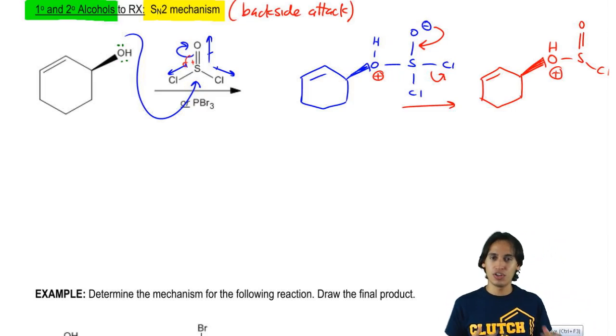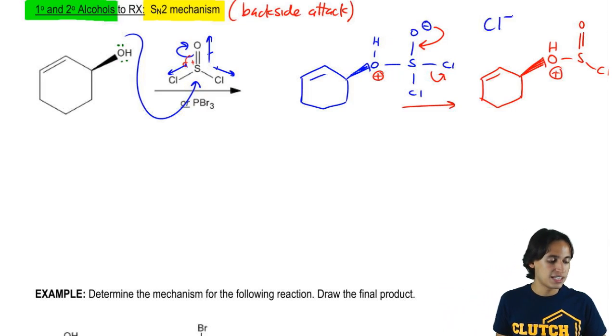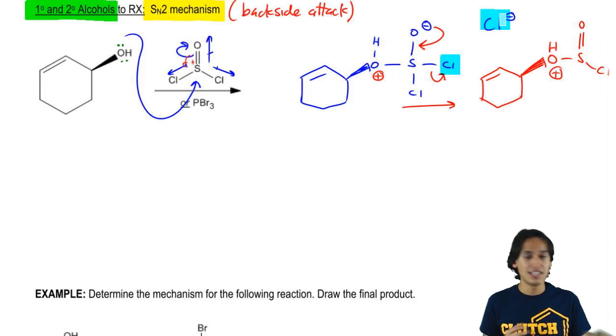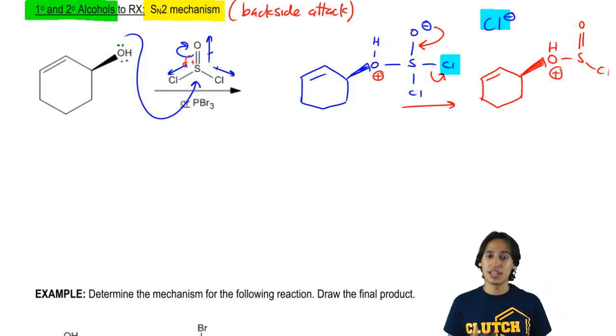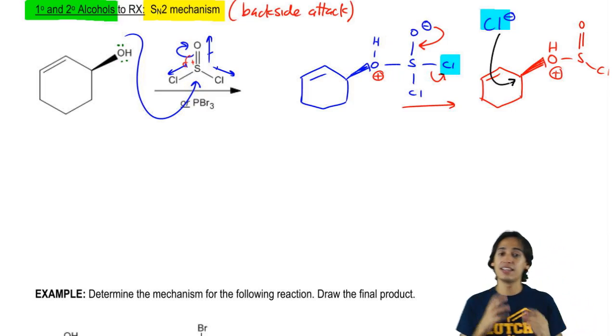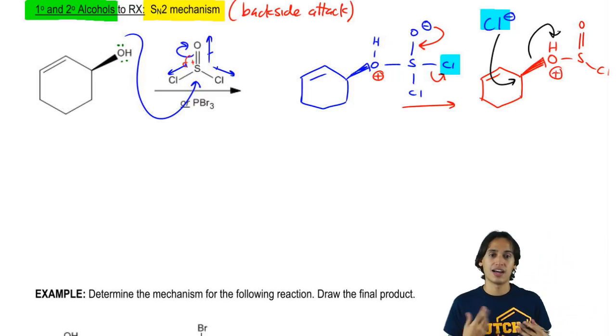What do you think could kick it out? What do you think could attack the carbon and kick out this big leaving group and it's going to be the Cl negative that just got kicked out. This Cl that we kicked out is now this Cl. And what's going to wind up happening is that now we get the backside attack.